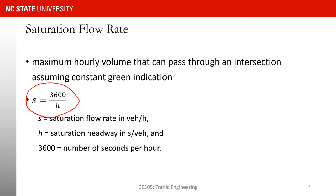So what is saturation flow rate? Saturation flow rate is the maximum flow rate that you're going to observe passing through an intersection, and there is a big assumption: we assume that the signal indication stays green forever when we are measuring the saturation flow rate. Using the same relationship between flow rate and headway, we have saturation flow rate equal to 3600 divided by saturation headway, as shown by the equation on this slide.